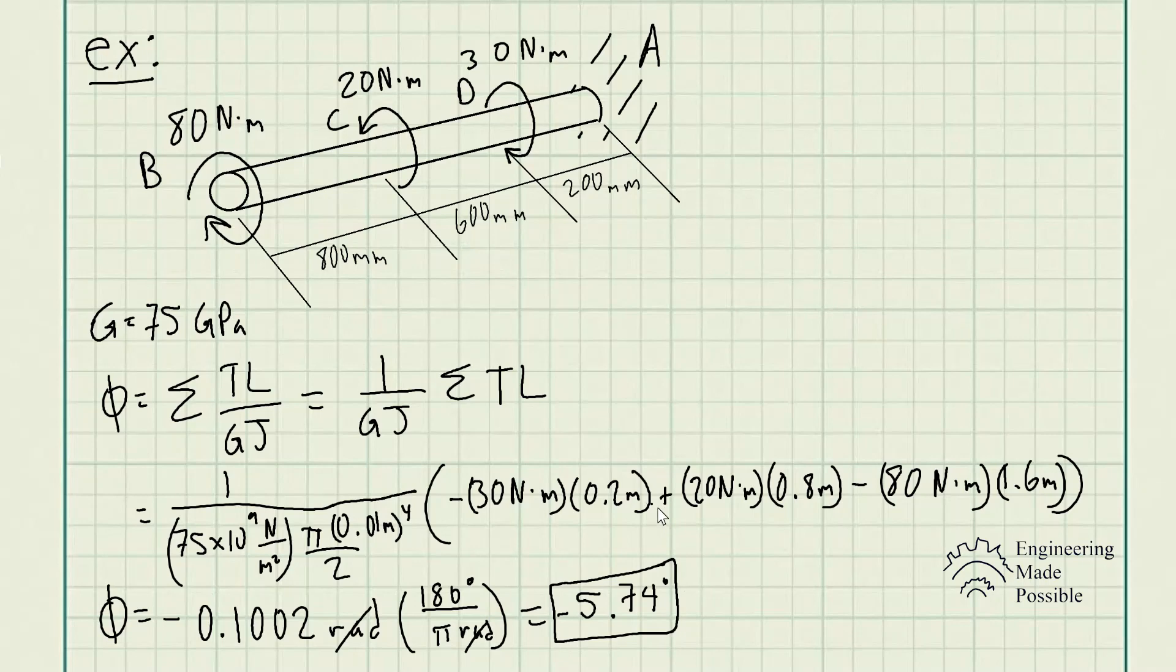And since we use the sign convention going clockwise being negative, the angle of twist at point B is going to twist 5.74 degrees clockwise.